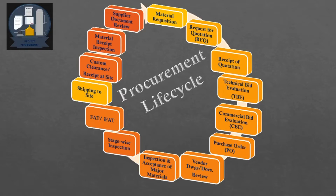The manufacturing process also includes an inspection process, which in many cases is stage-wise inspection based on an ITP — Inspection and Test Plan. Once manufacturing is completed, there is a final test called the Factory Acceptance Test, or FAT.